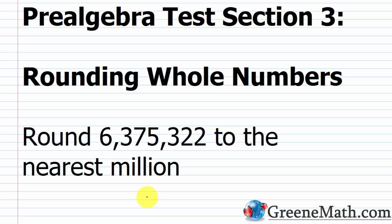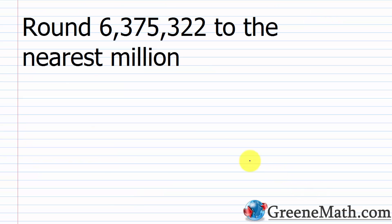Hello and welcome to pre-algebra test section 3 on rounding whole numbers. For the first problem, we want to round 6,375,322 to the nearest million.